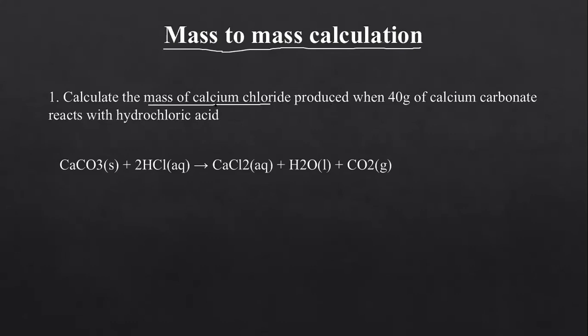For example: calculate the mass of calcium chloride produced when 400 grams of calcium carbonate reacts with hydrochloric acid. They've given us the mass of calcium carbonate and want us to find the mass of CaCl2. Two things are of major concern: calcium carbonate and calcium chloride. Before diving into calculations, write a properly balanced chemical equation.